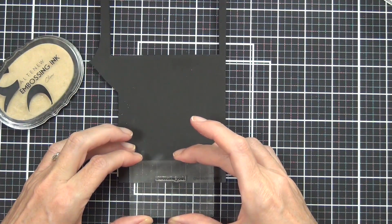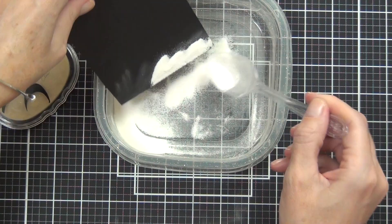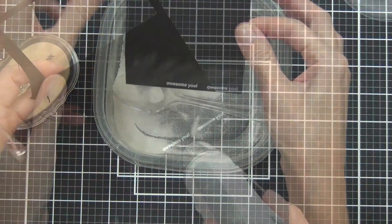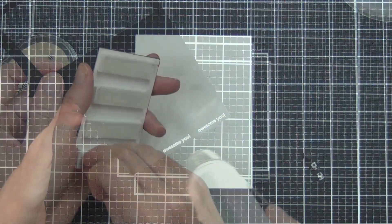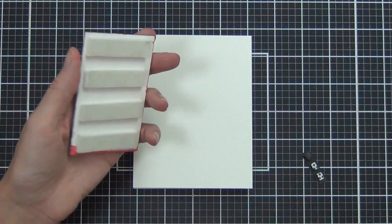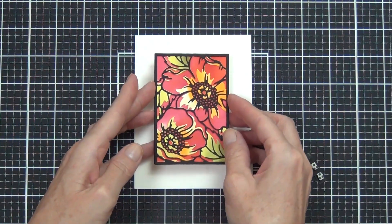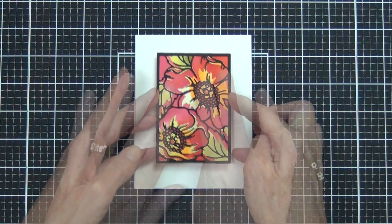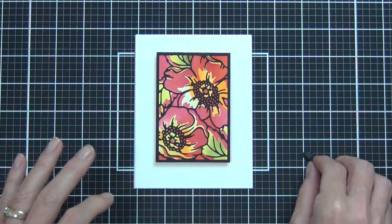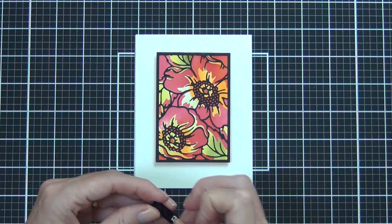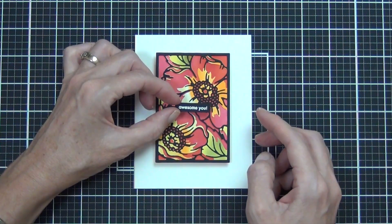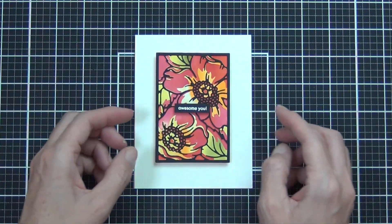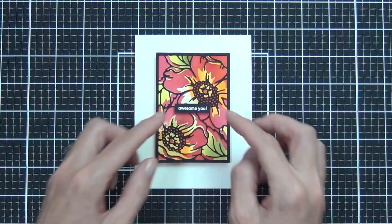Now my layers are together. I did actually go around the outside with a black marker. The sentiment today I'm going to white heat emboss on some jet black cardstock - this is from the Statement Flowers stamp set. All that's left to do on this card is pop my panel and my sentiment up on the front of the card. I do like to use the black foam squares behind my black sentiments - that way they're less visible, I find, but you could certainly use whatever you have.